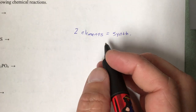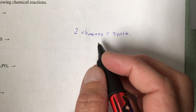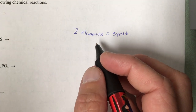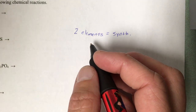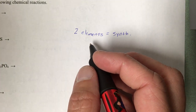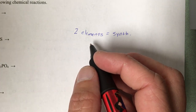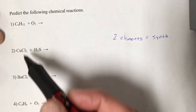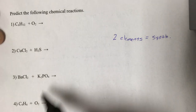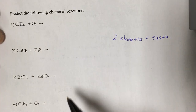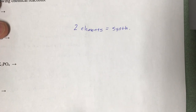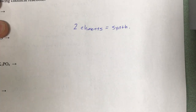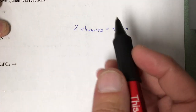Let's talk about reaction types and how you use that to figure out what the products of a reaction are going to be — to complete the chemical reaction where I give you the reactants and you tell me what the products are. First, you need to know what kind of reaction it is, and to do that you're going to look at what I give you.